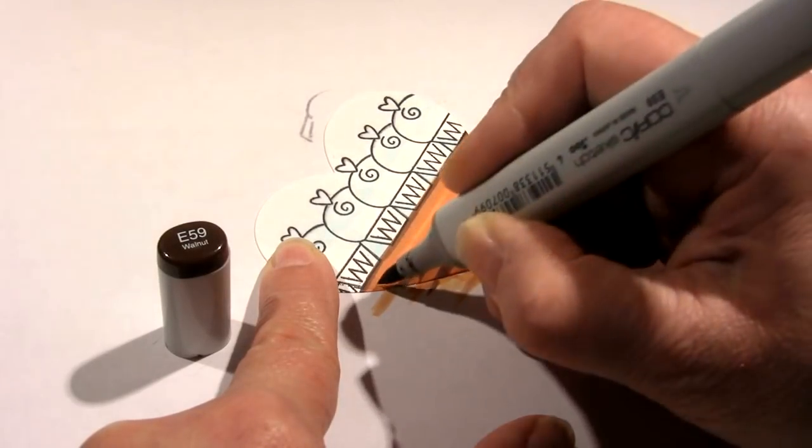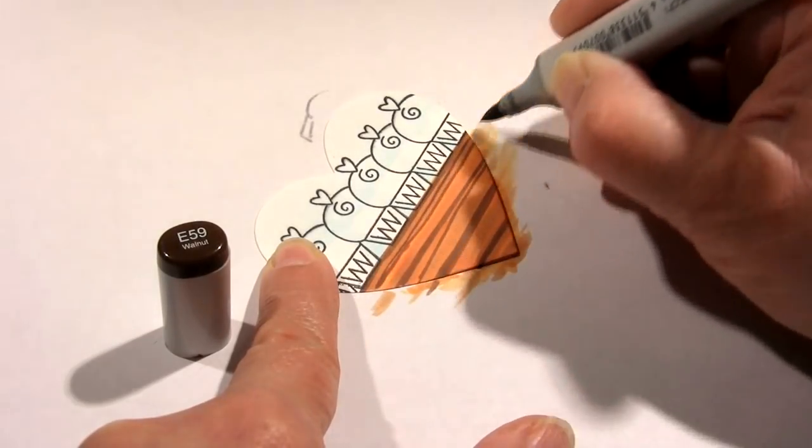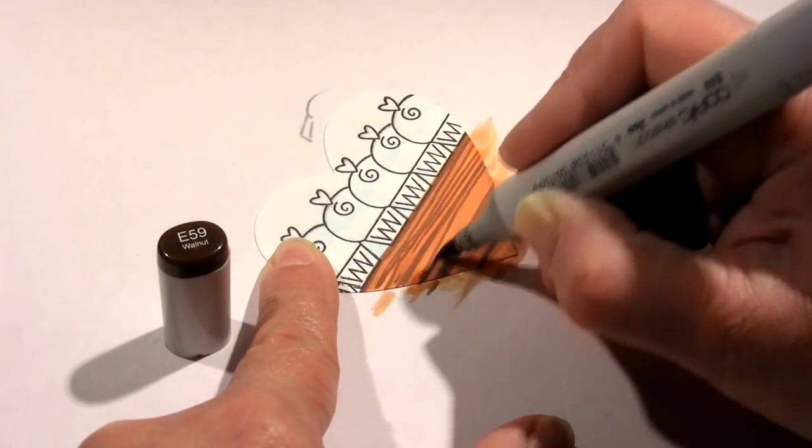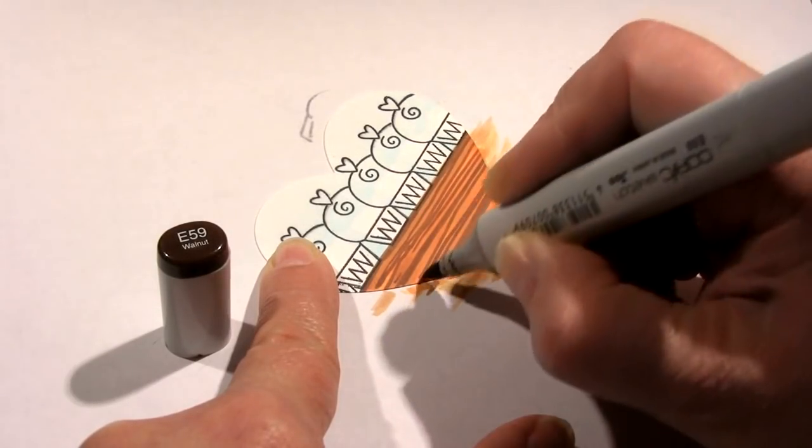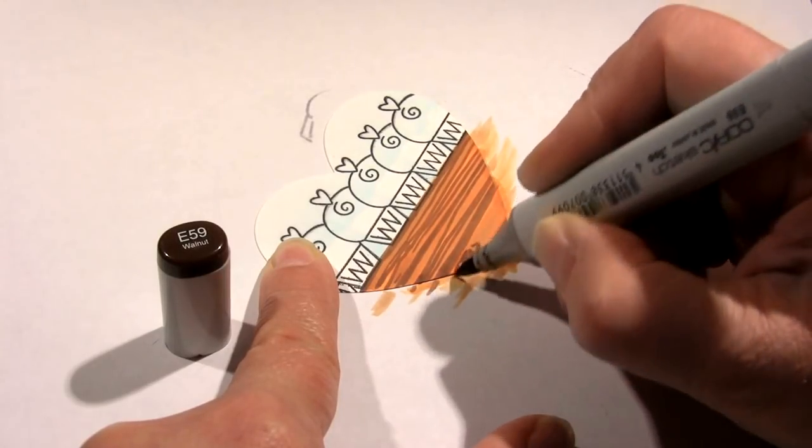Now I'm going to go in with just the tip of the Copic marker and make as thin lines as I can. Some of them can be kind of squiggly, and some areas can have more lines than others. You can even draw knots into it if you want—all different kinds of things you can do to create wood textures.